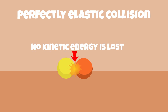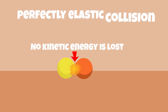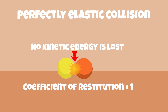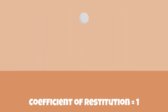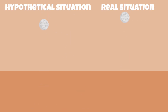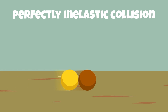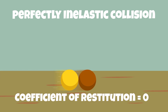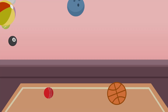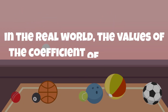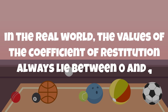A collision where no kinetic energy is lost is called a perfectly elastic collision, and for such a collision to occur, the value of the coefficient of restitution would be equal to 1. Such a collision would be the bounciest reaction an object could possibly give. However, a perfectly elastic collision isn't possible in the real world, as some energy is always lost during the collision and released in the form of heat or sound. On the other side of the spectrum is a perfectly inelastic collision, wherein the two objects stick together and move together after the collision. In this case, the coefficient of restitution would be 0. Most real-life collisions are somewhere between these two extremes.